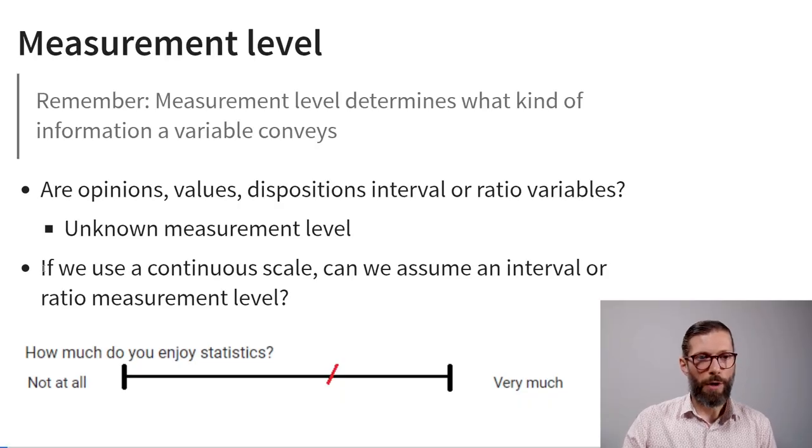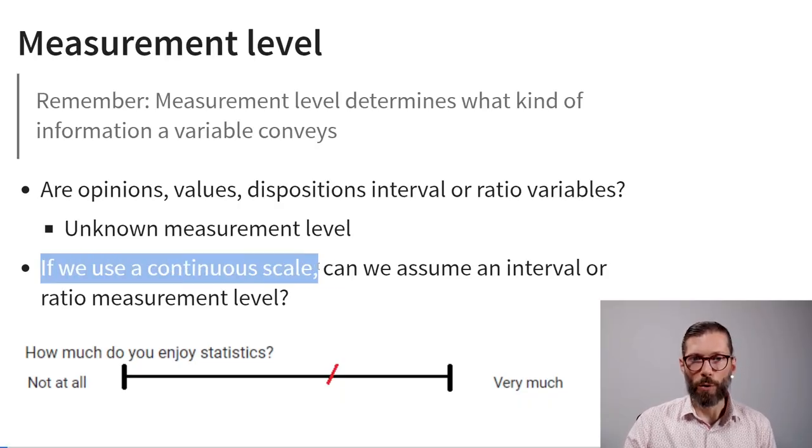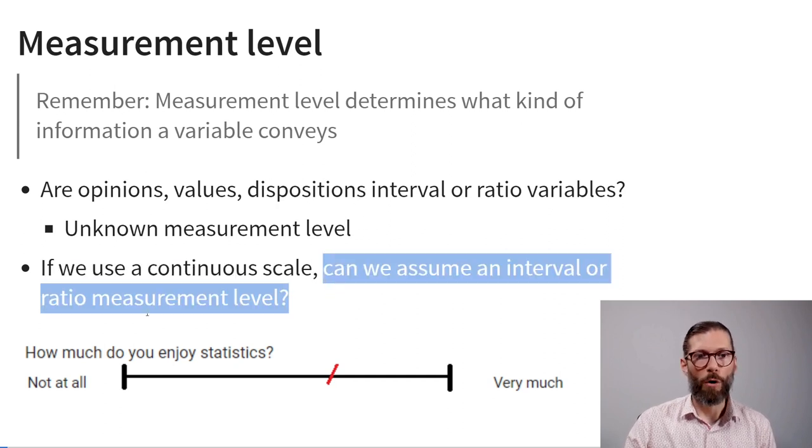This takes us back to measurement level, the topic of our very first lecture. The measurement level of a variable determines what kind of information it conveys. We can ask: are opinions, values, and dispositions interval or ratio variables? Very often we don't actually know the measurement level of a variable. So if we use a continuous scale to measure opinions and dispositions, we may not be able to assume interval or ratio measurement level.